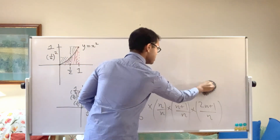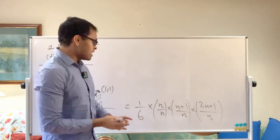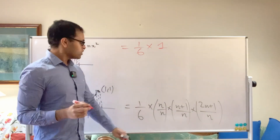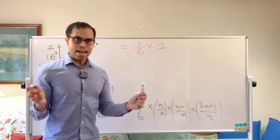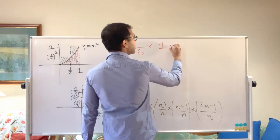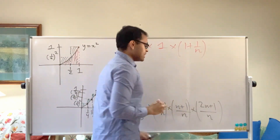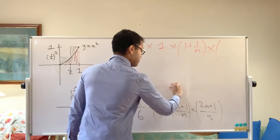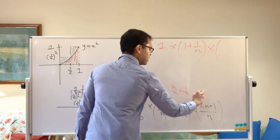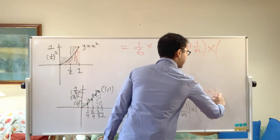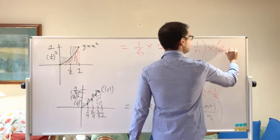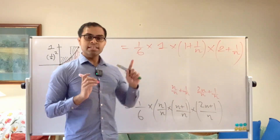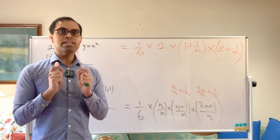Now let's simplify. We take out 1 over 6, and divide each factor. We have 1 over 6 times n over n times n plus 1 over n times 2n plus 1 over n. Simplifying: n over n is 1; n plus 1 over n is 1 plus 1 over n; and 2n plus 1 over n is 2 plus 1 over n. So the expression becomes 1 over 6 times 1 times (1 plus 1 over n) times (2 plus 1 over n).